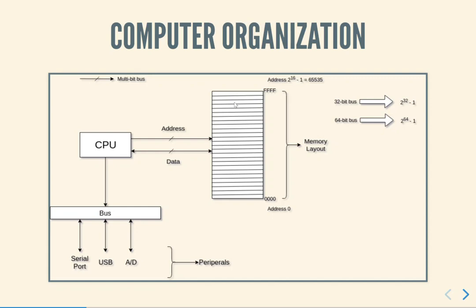If you had a 32-bit address bus, you would have up to 2 to the power 32 minus 1, which is roughly 4 billion locations. And if you had a 64-bit bus, you would have 2 to the power 64 minus 1 possible locations, which is basically much larger than any realistic memory that you can build.